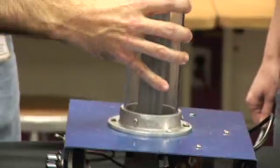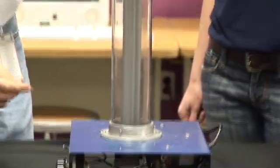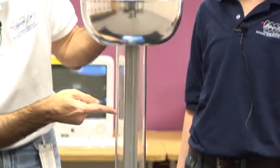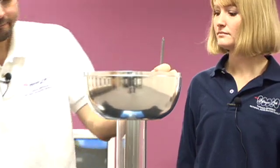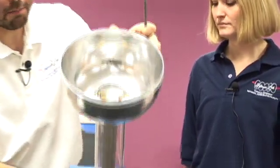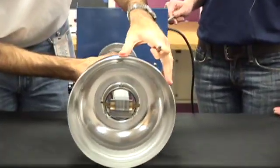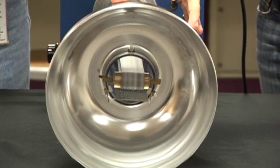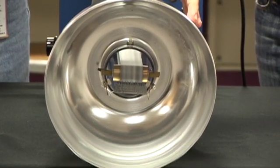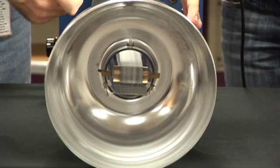The charges ride up the belt and into the dome. Inside the dome, you only have a couple of parts. You have another pulley, which is made out of a different material than the bottom pulley, and another wire mesh that'll transfer the charges to the dome.